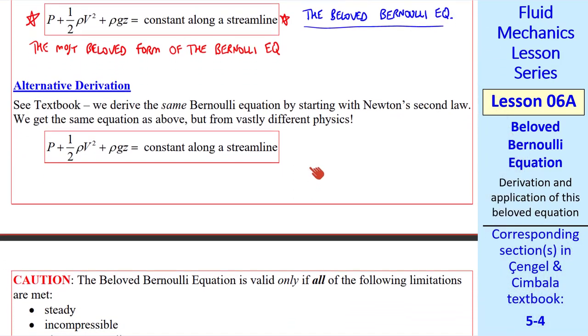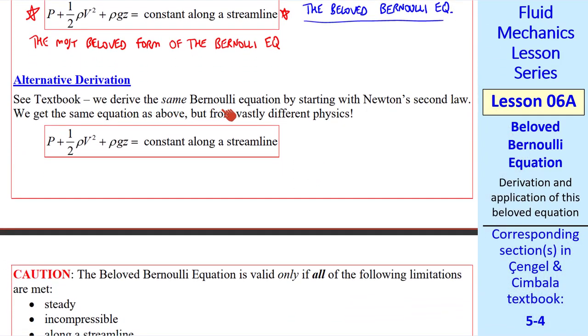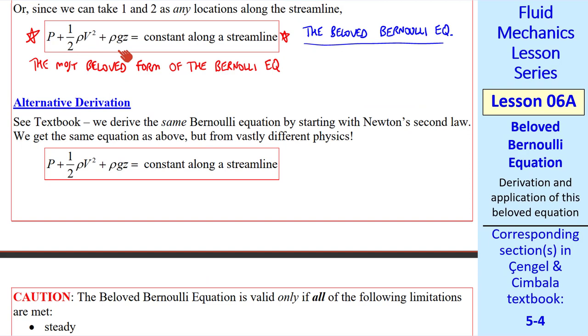There's an alternative derivation in the textbook. We derive the same Bernoulli Equation by starting with Newton's Second Law. We get the same equation, the Beloved Bernoulli Equation, but from vastly different physics. I find this amazing. We got this equation from Conservation of Energy. We get the same equation from Newton's Law. In either case, we end up with the Beloved Bernoulli Equation.